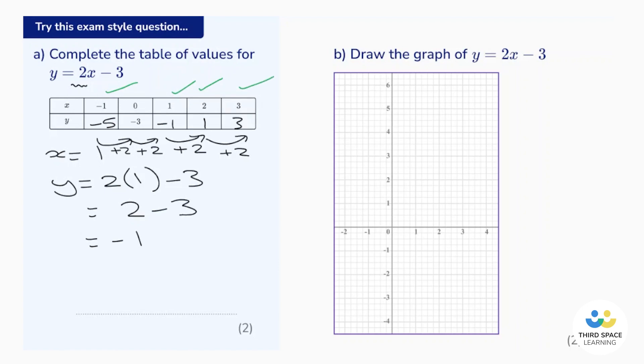Part B says draw the graph. So all we have to do now is plot our points. We have negative 1, negative 5 - that goes off the graph. We have 0, negative 3, so that's that one there. We have 1, negative 1. We have 2, 1. And we have 3, 3.